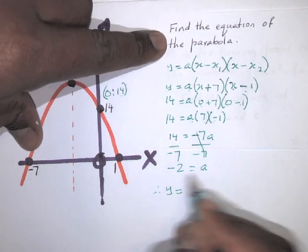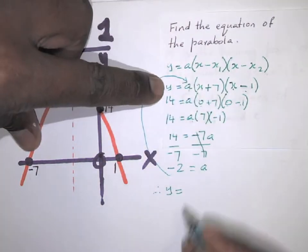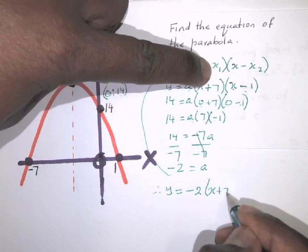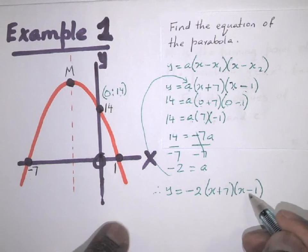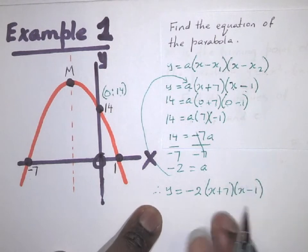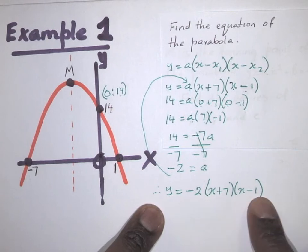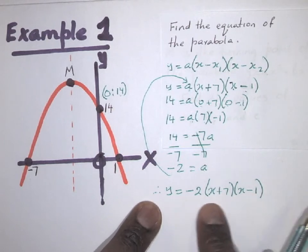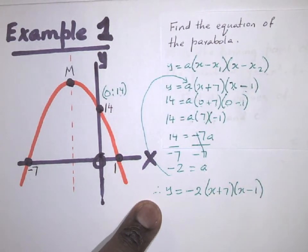Now I know a = −2, so I plug it back into the equation. Therefore y = −2(x + 7)(x − 1). That is the equation of the parabola. If the question asks you to remove brackets you can do so, otherwise this is your answer.